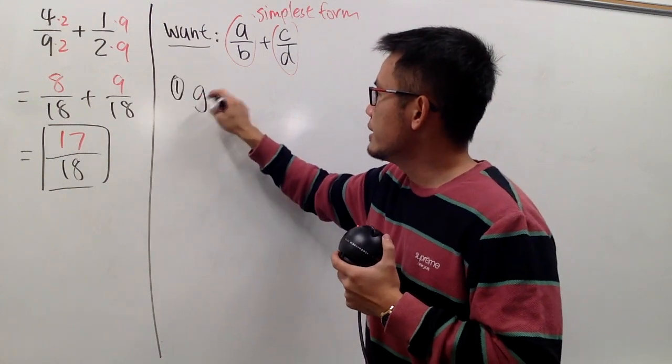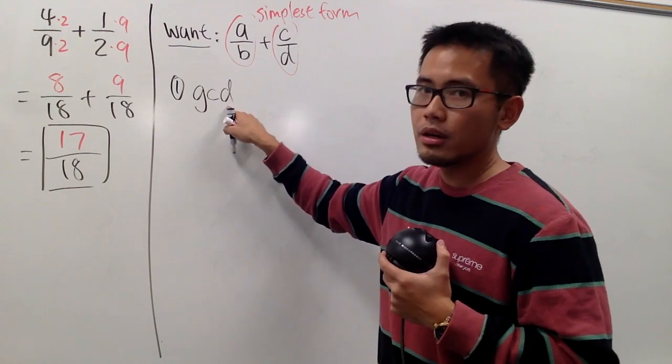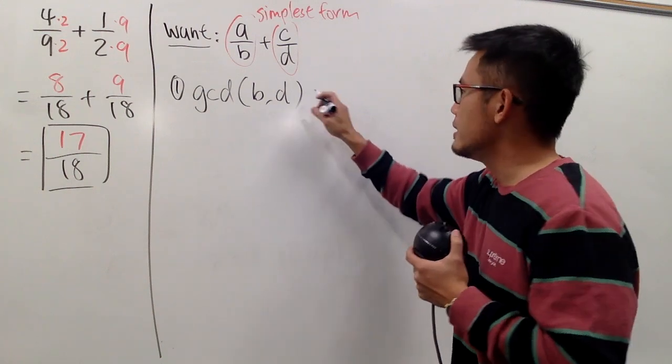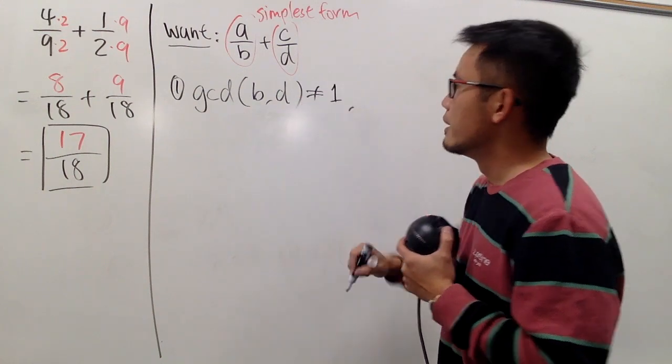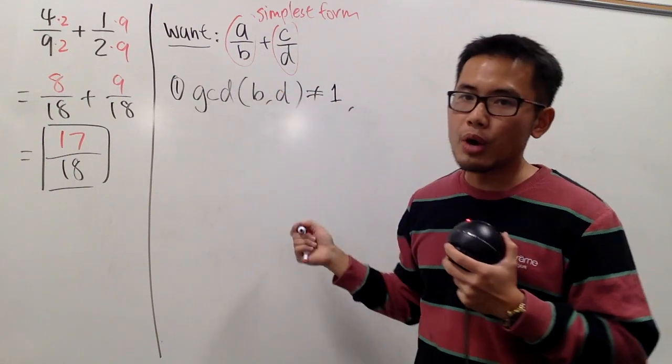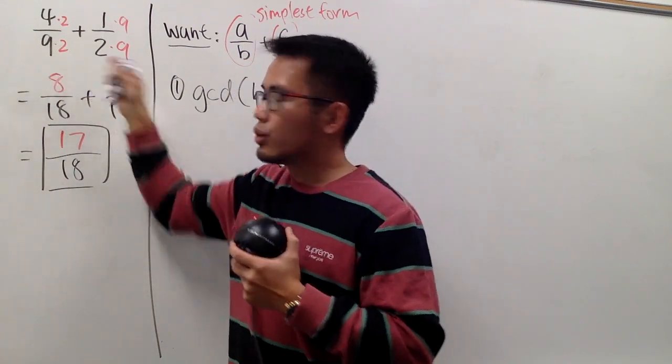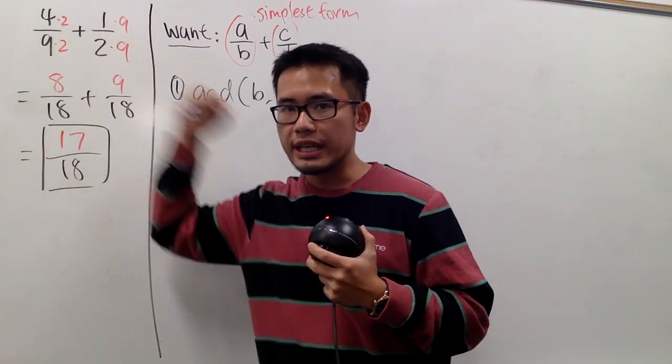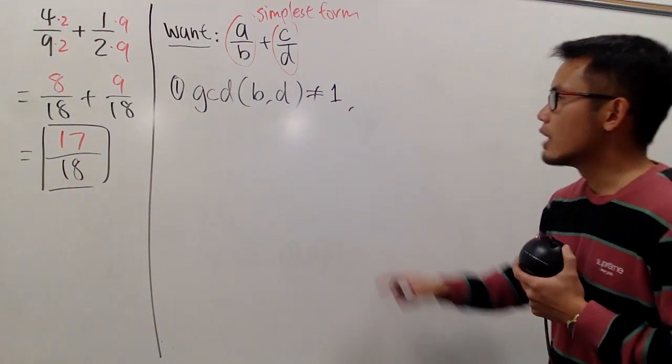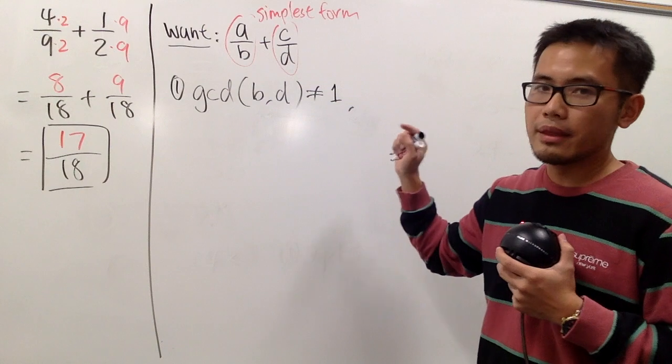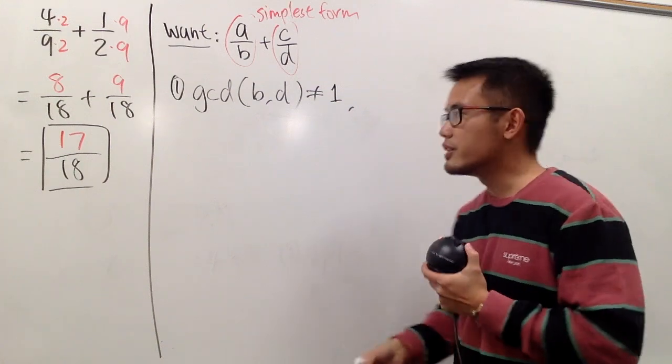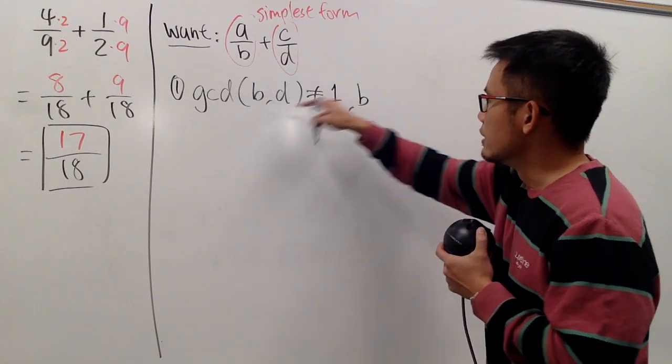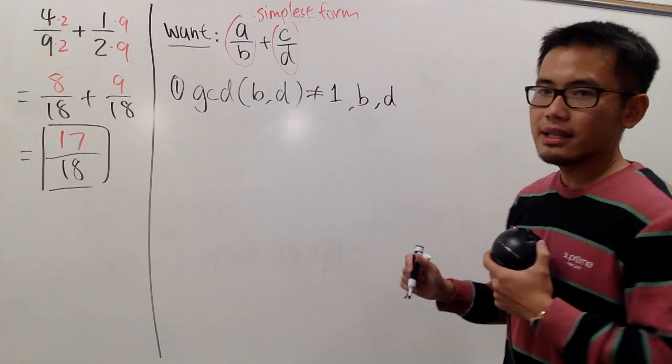I want that the greatest common divisor, or the greatest common factor of the denominators, namely b and d. The gcd of b and d, I don't want this to be 1. In another word, I don't want this to be coprime. You see, 9 and 2, they were coprime. So to get the LCM, it was pretty easy. You just multiply 9 and 2 together, you get 18. That's boring, in my opinion. So I don't want the gcd of these two numbers to be 1. And also, I want to make this study more challenging. I don't want the gcd to be 1 of these. So in another word, I don't want the gcd to be b or to be d. So these are forbidden.